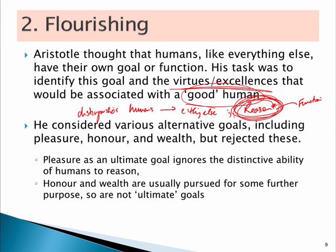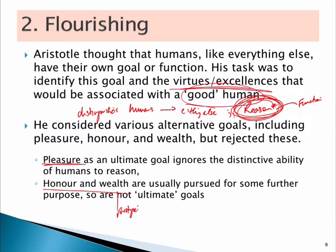When considering whether our goal should be pleasure, Aristotle said all other animals can pursue pleasure too, so there's nothing really distinctive about that as a human. Similarly, he looked at wealth, honor, and prestige and said those things are done to get something else, and other animals have hierarchies too — primates and wolf packs have hierarchies. That's not really unique to humans either. Instead, he said it's about using our rationality in a certain way that leads to flourishing, by pursuing the virtues themselves.